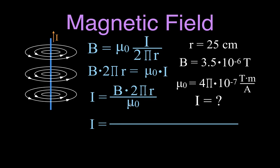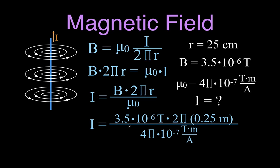Plugging the values in: the current equals the magnetic field 3.5×10⁻⁶ teslas, times 2π times 0.25 meters — converting centimeters to meters — divided by 4π×10⁻⁷ tesla·meter/ampere. The teslas cancel, the meters cancel, and we're left with amperes. With that magnetic field at that distance from the wire, we would need a current of 4.38 amperes.